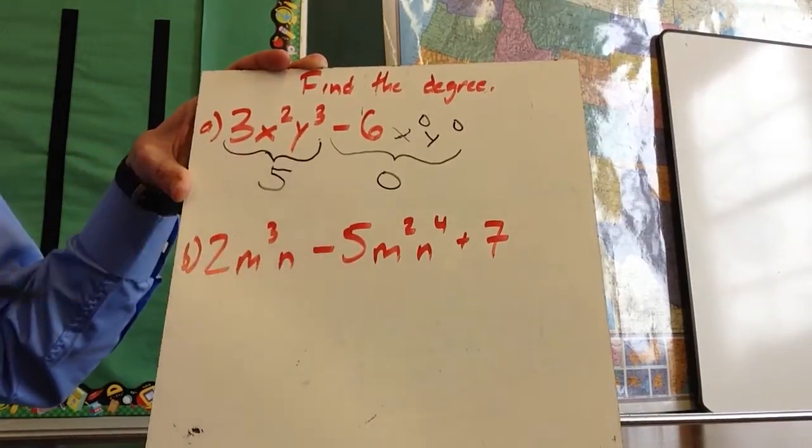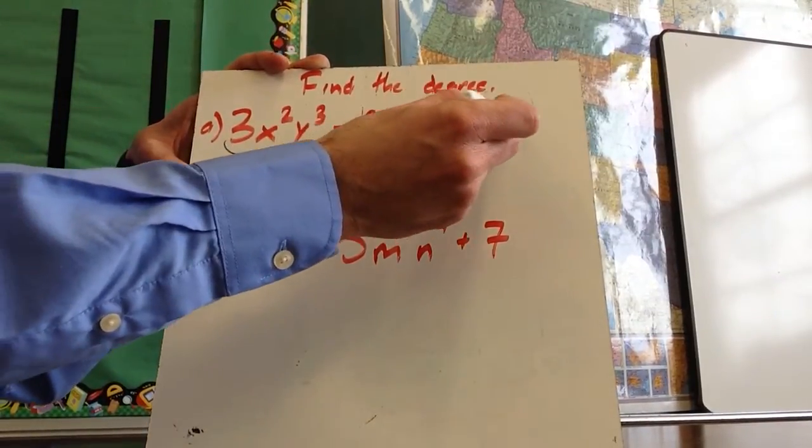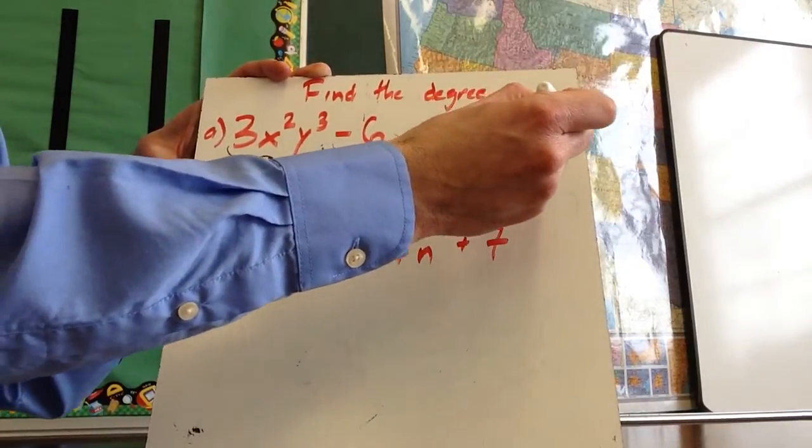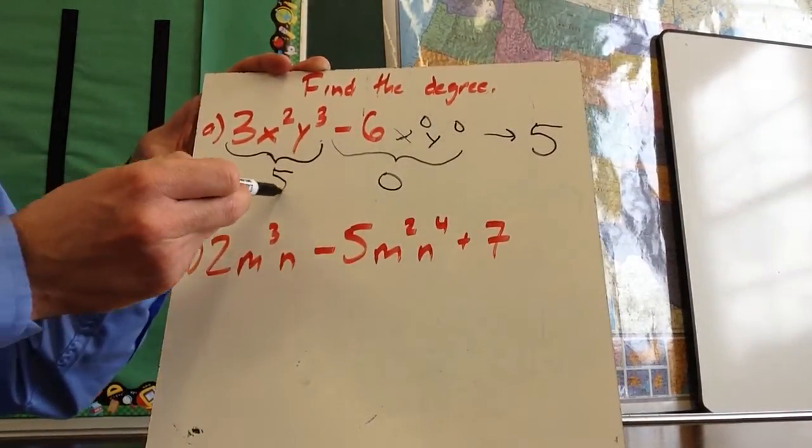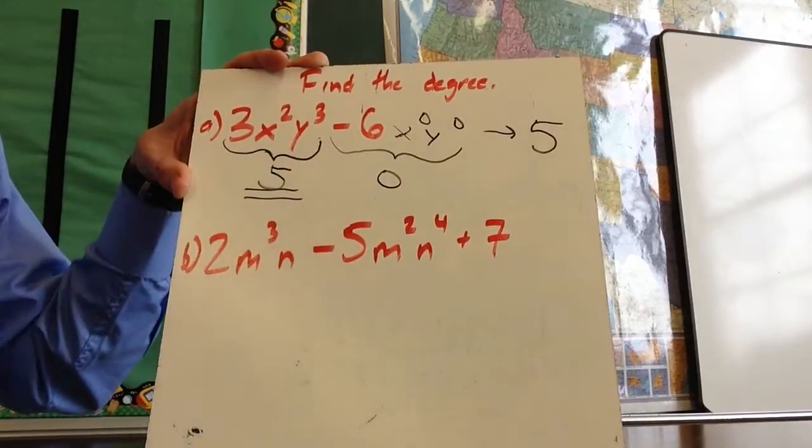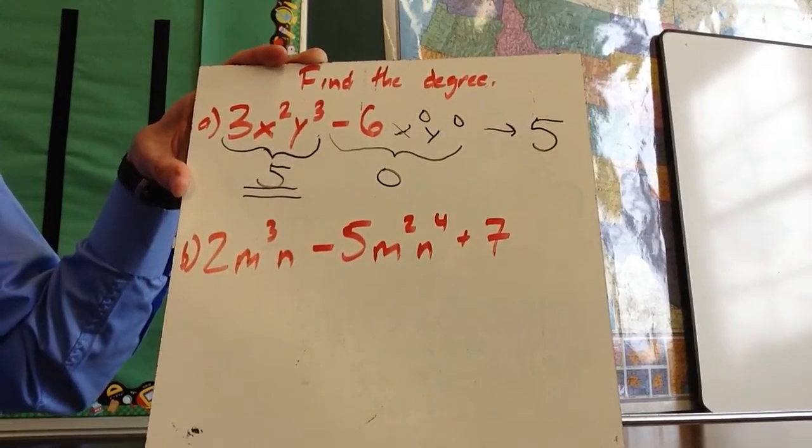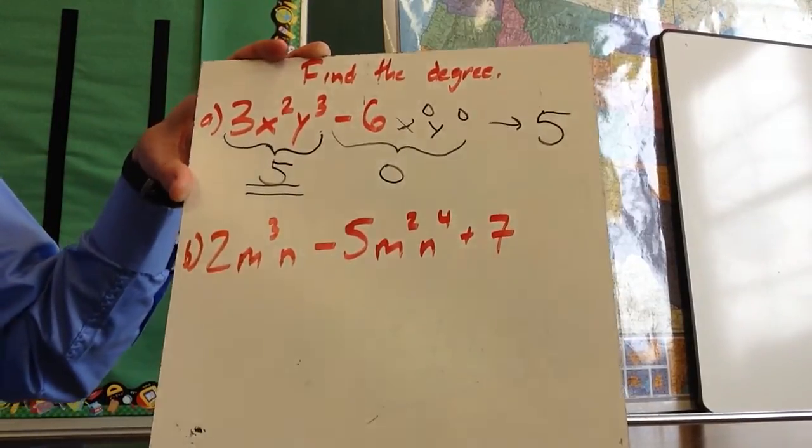So this polynomial is to the fifth degree, because I'm just going to look for which one is the highest. I'm not actually adding them together. I'm looking for just which one is the highest. We're going to take a look at that in this next example.